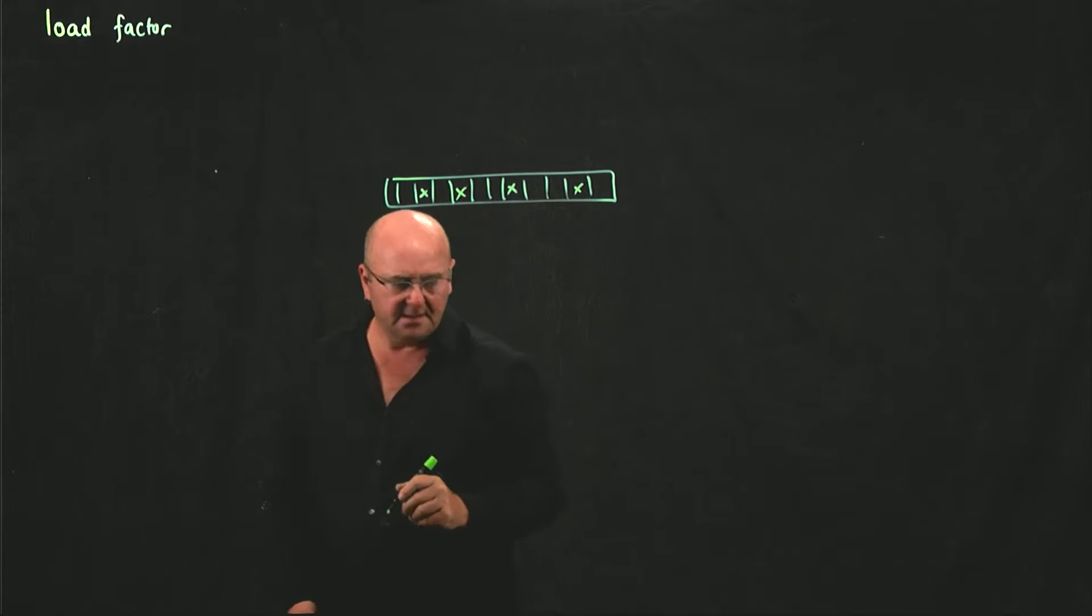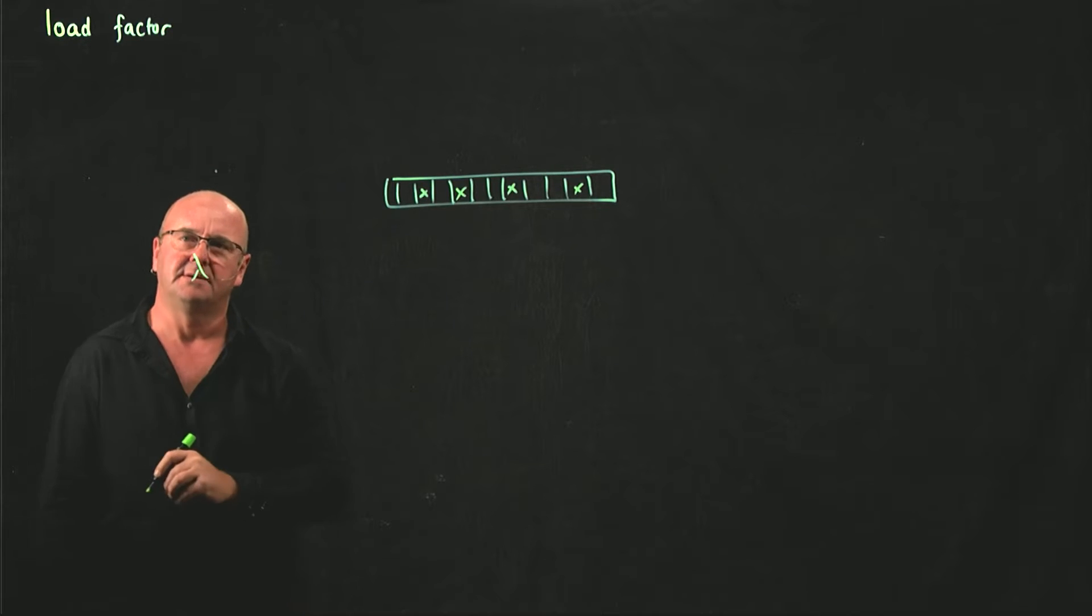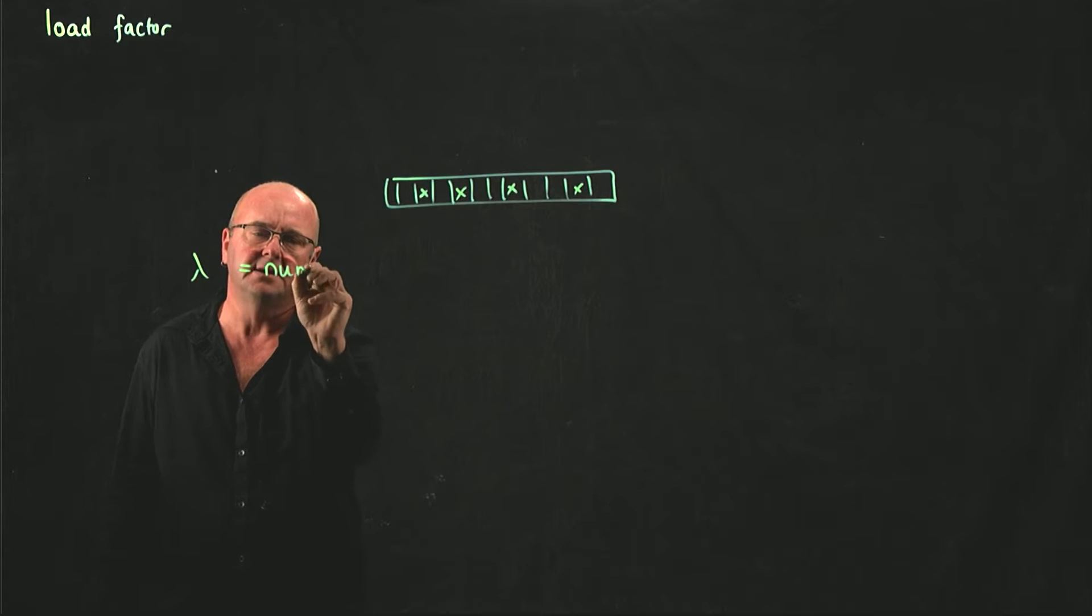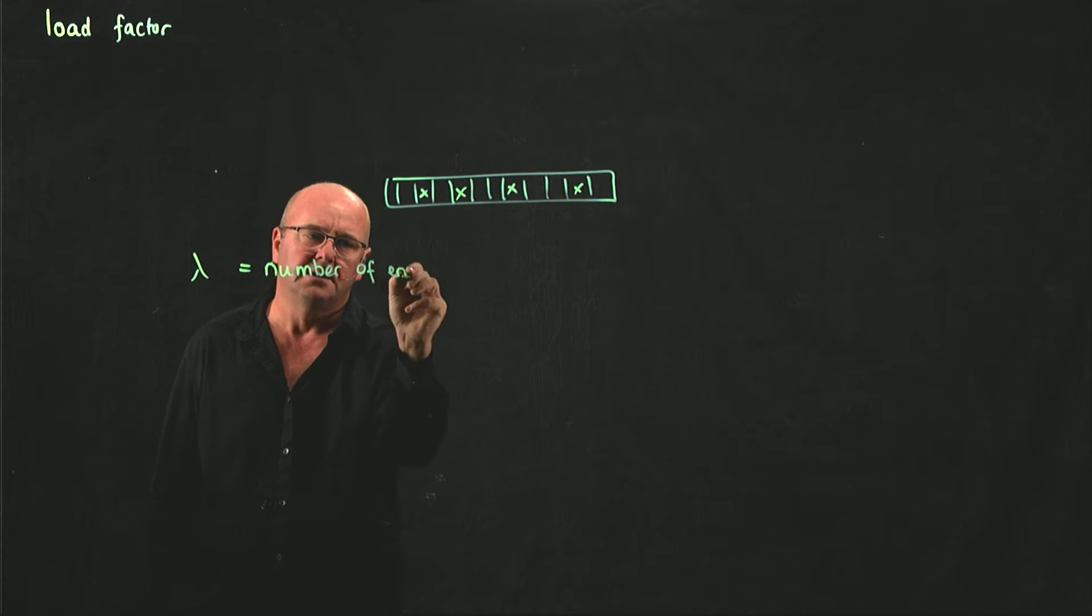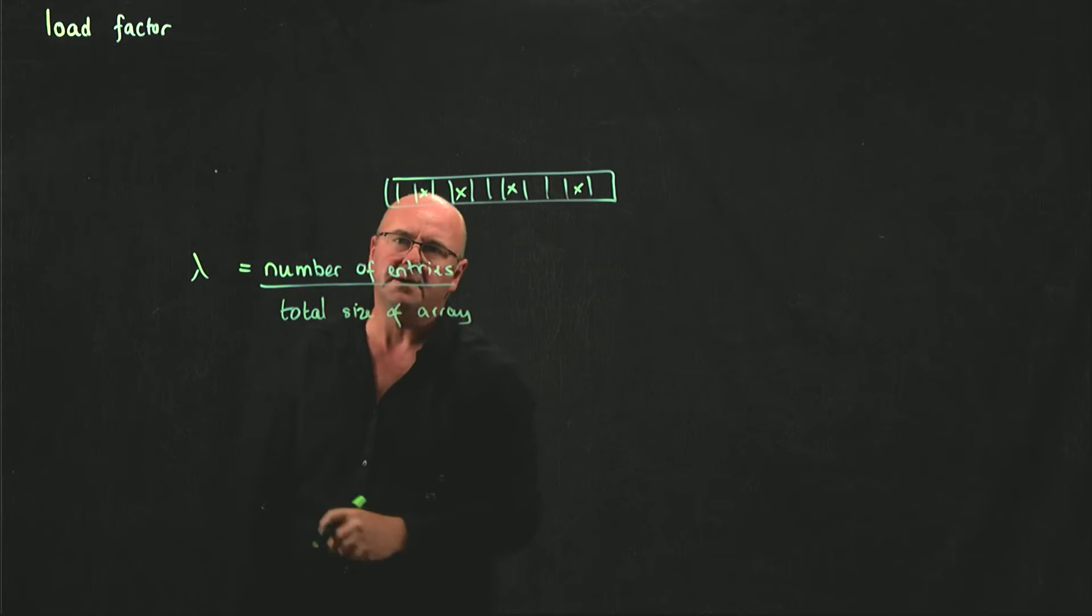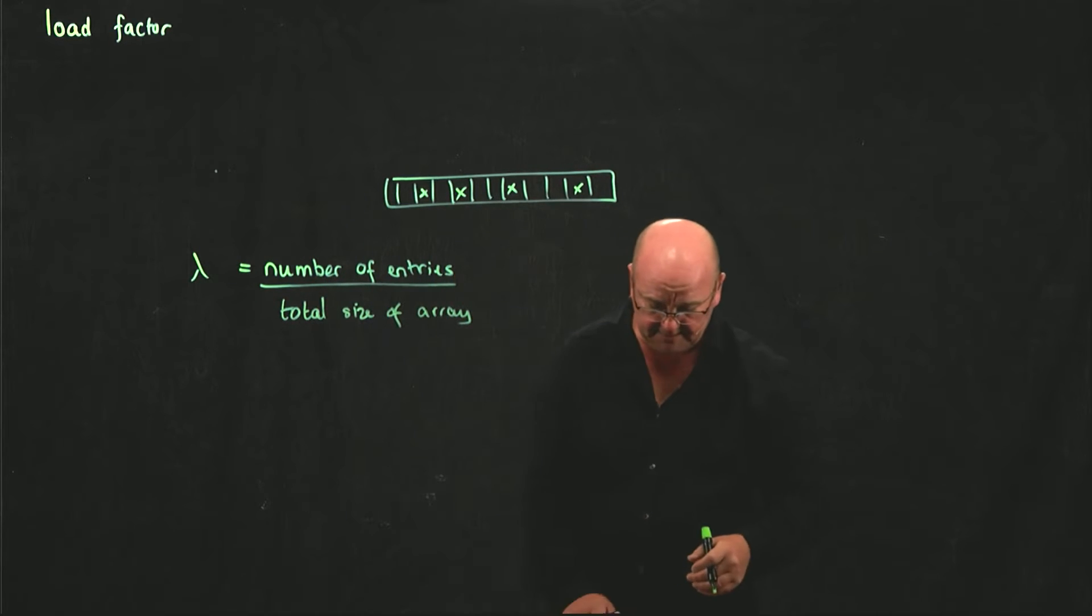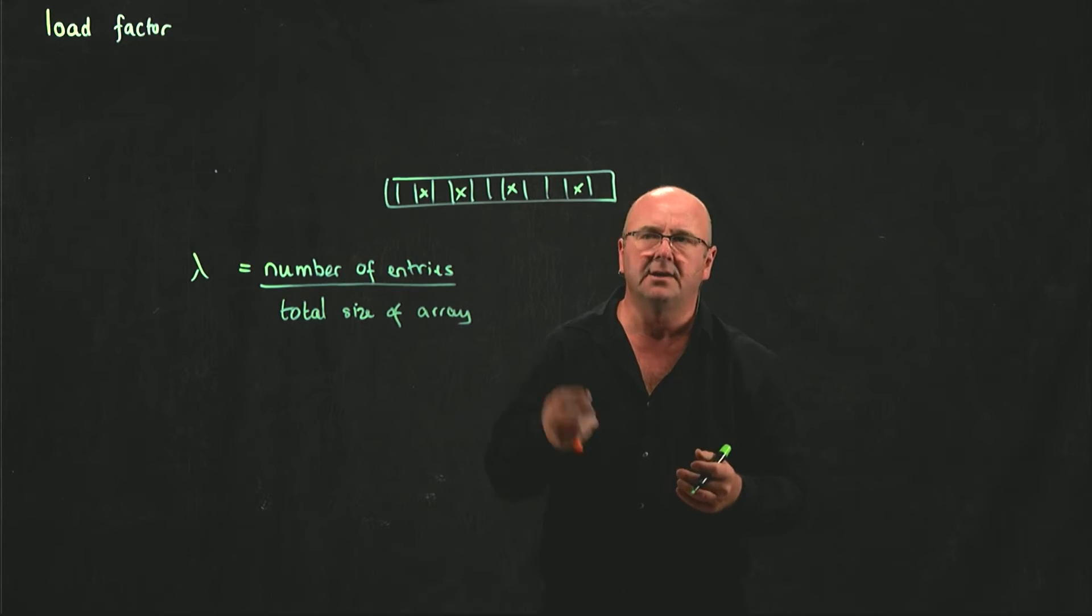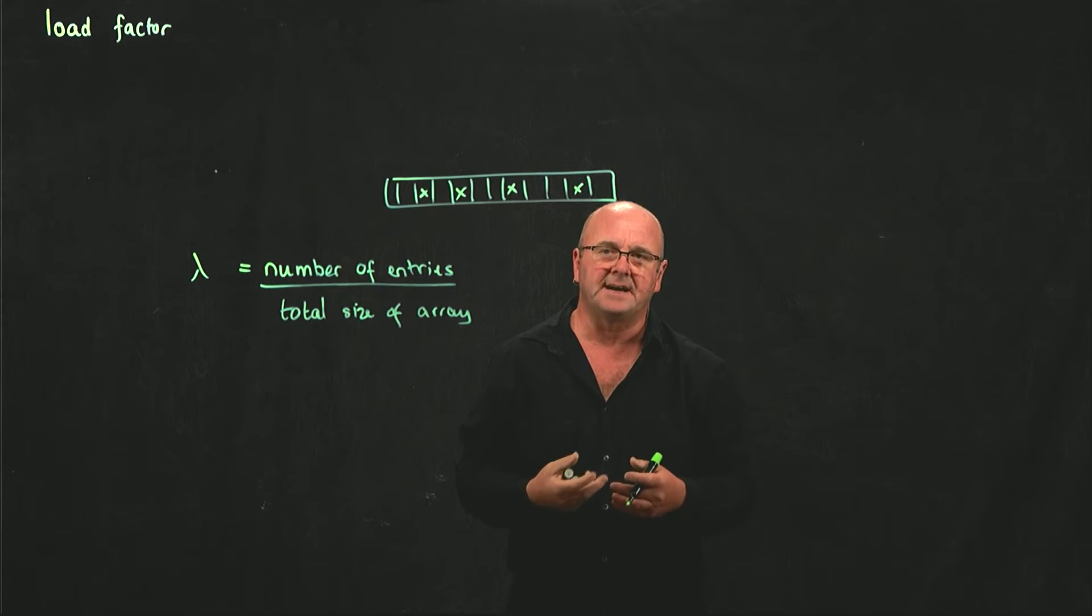So the load factor, which we call lambda for load, is the number of entries in the array divided by the total size of the array of our hash. So if we have an array with 100 slots and 25 of them are full, then our load factor is 0.25.